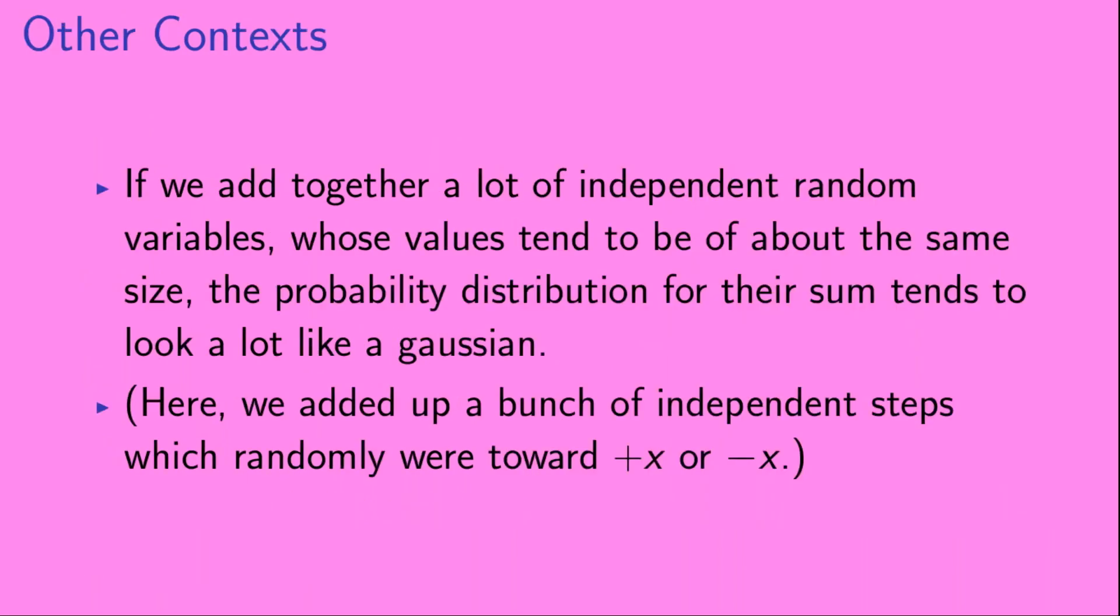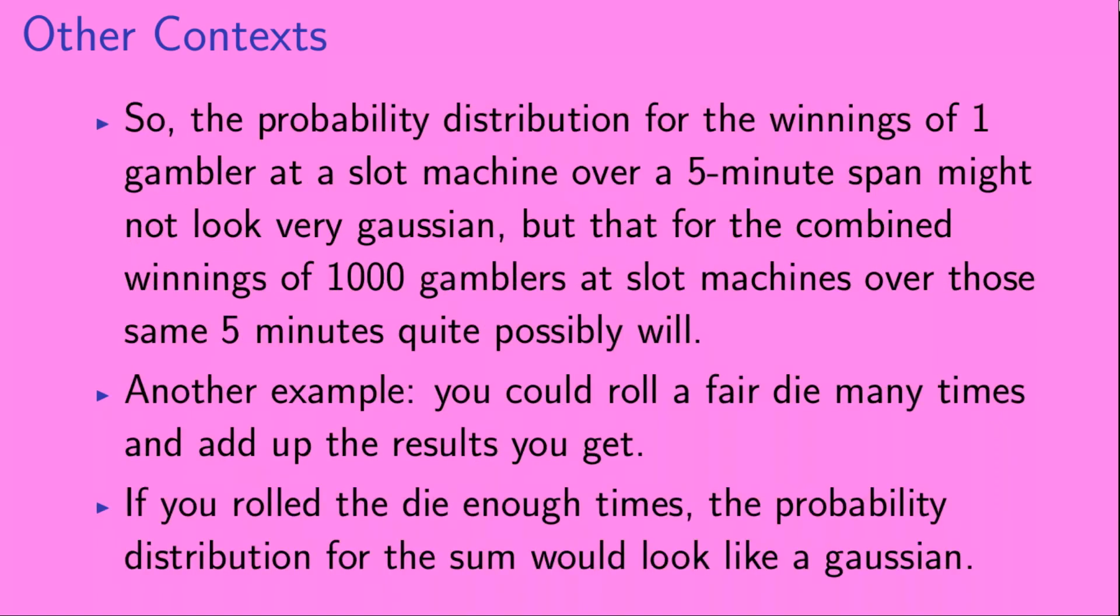So, if we add together a lot of independent random variables, whose values tend to be of about the same size, the probability distribution for their sum tends to look a lot like a Gaussian. Here, we added up a bunch of independent steps, which randomly were toward plus x or minus x.